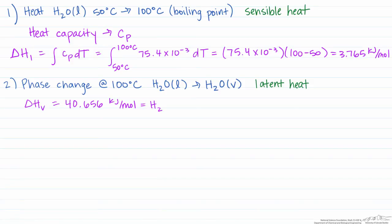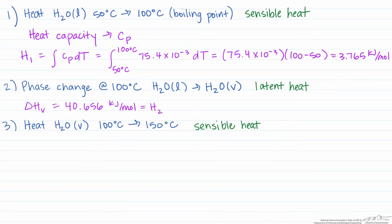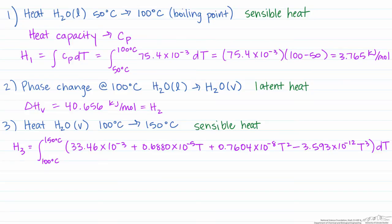Our third step also involves sensible heat, so we use a heat capacity. However, we take the integral from 100 degrees C to 150 degrees C, and now we use the heat capacity of the vapor, which is slightly more complicated than that of the liquid. When we calculate this, it equals 1.722 kilojoules per mole. Often, to simplify things, we truncate after the first term, and if we had done that instead, we would have ended up with 1.673 kilojoules per mole.